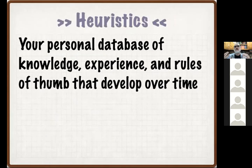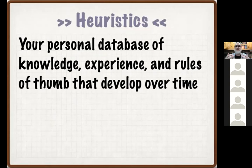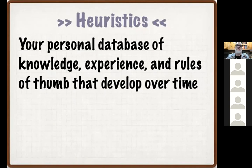Heuristics in general is your personal database of knowledge. We are constantly adding information to our database in a number of different ways: we can add it from direct experience by playing the game, through observational experience by watching friends play, or by researching the game. If you want to get better at chess, you can read books on chess or study the great games that have taken place over the years. These things we slowly build up over time, chipping away at the uncertainty we find in games. The stronger our experiences and the more information we have in our database, the more likely we are able to rely on that instinctively and make good decisions, evaluations, and estimations.